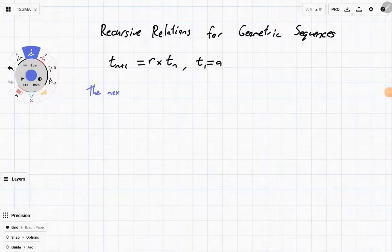So the way we read this is we say the current term, oh sorry the next term, t_{n+1}, is equal to r times the current term.